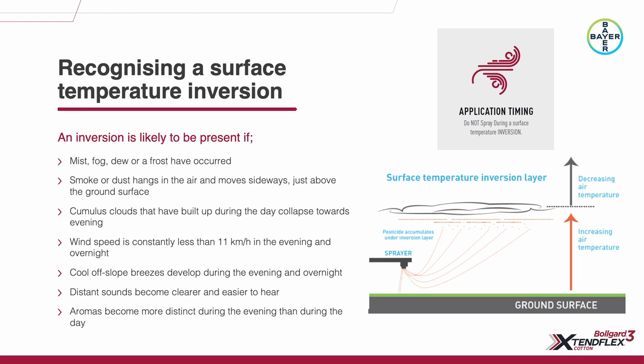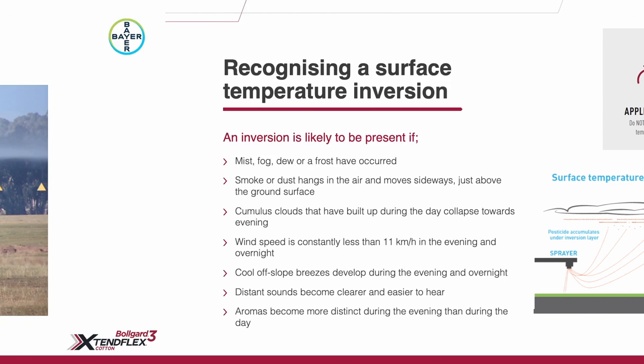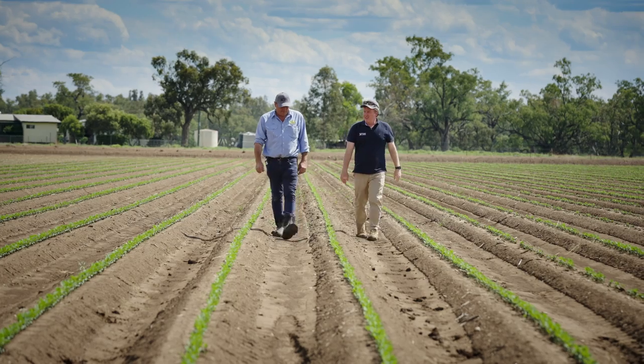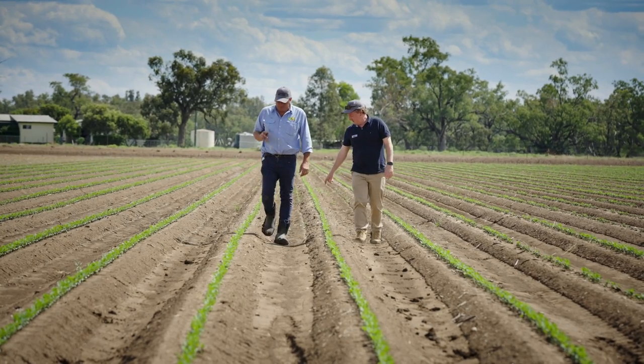It's absolutely critical that an applicator looks at the synoptic wind to know what is going on outside the inversion period, or above the inversion. When the sun comes up, if you've been applying under those conditions, your droplets may be suppressed underneath the inversion. When the surface temperature inversion decouples, droplets that you may have suspended in that atmospheric area may then move in unintended directions.